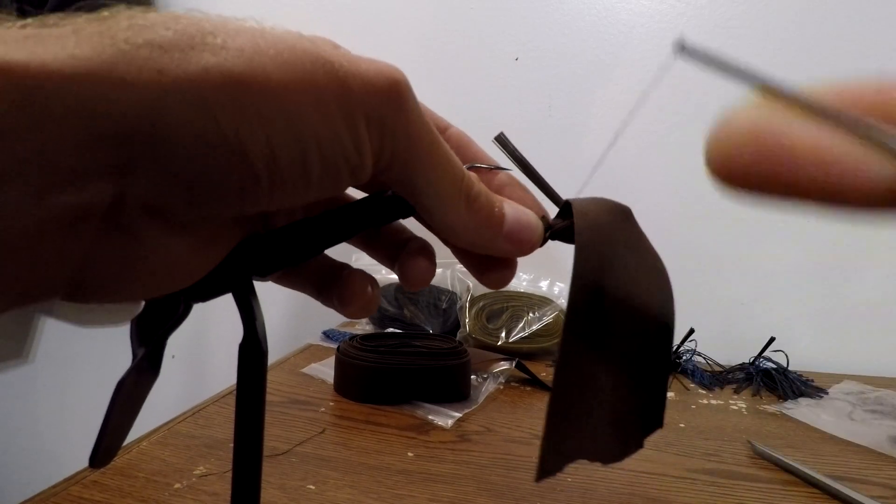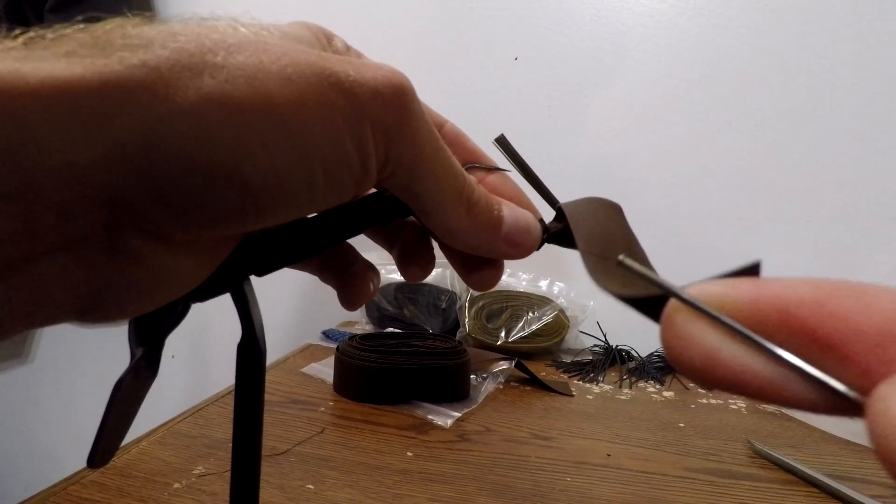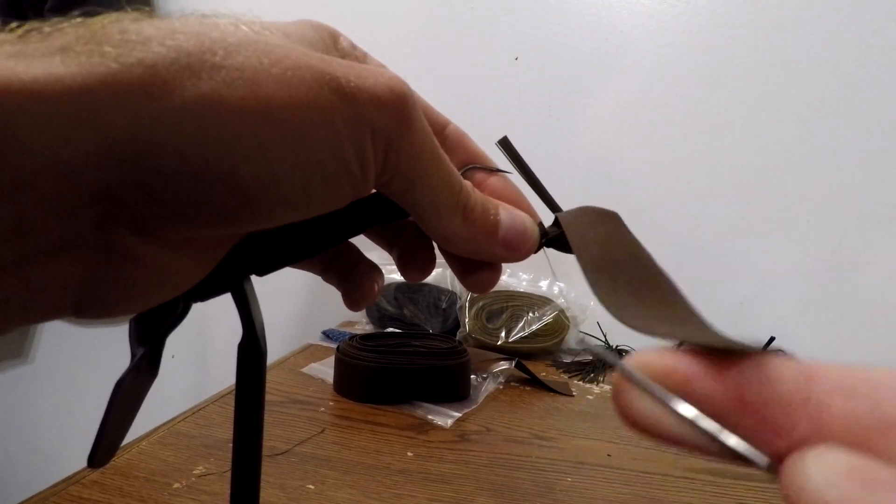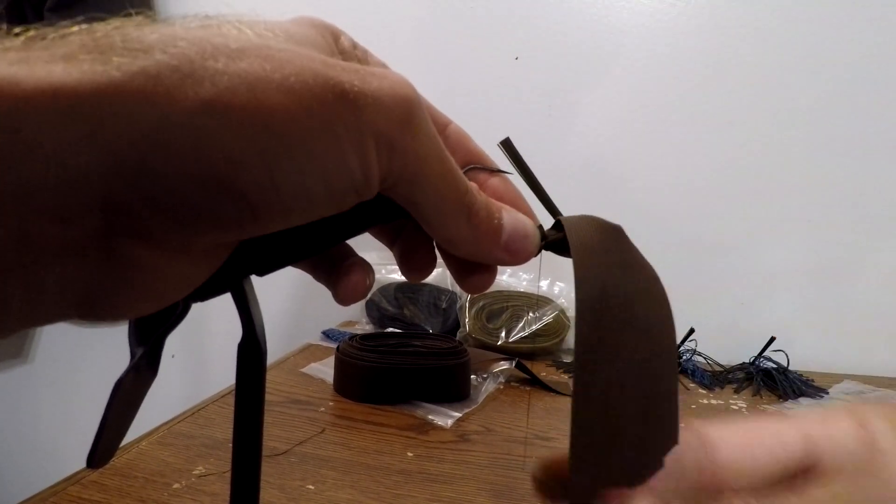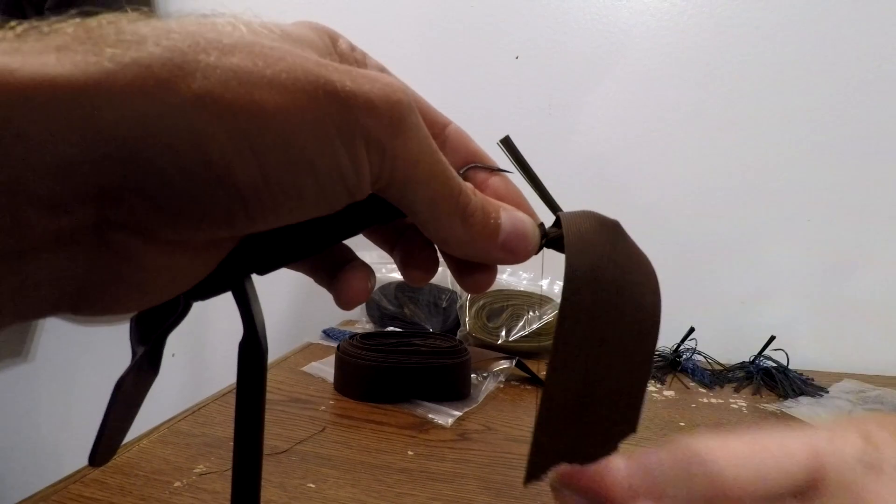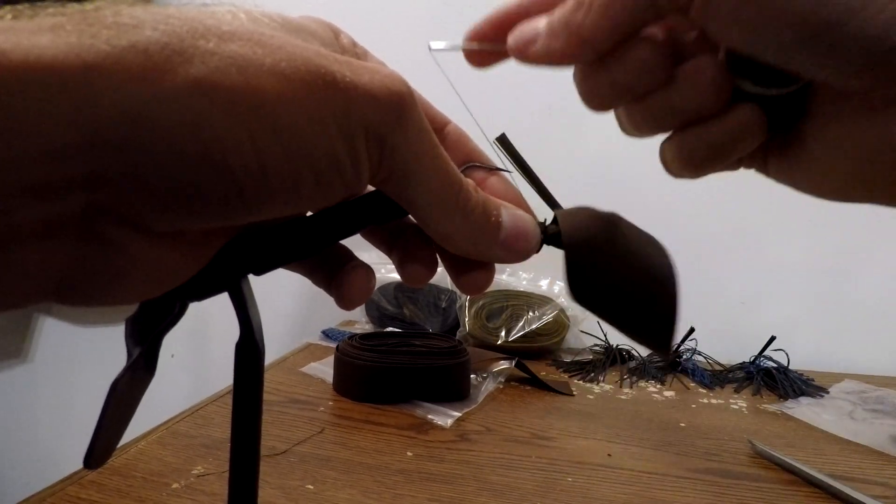You want to pull that really tight. You got to play with your thread a little bit and get to know the breaking point of it, because you want to get it just about there. You want to pull that extremely tight and get that on there so that skirt is never going to come off. Then you want to give it probably another 10 wraps just to make sure.